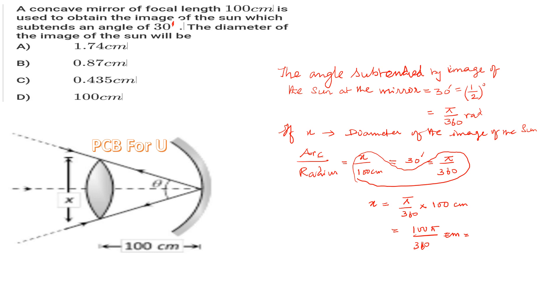So we can get this equals... using the pi radian value, dividing by 360, we can get approximately 0.87 centimeters.